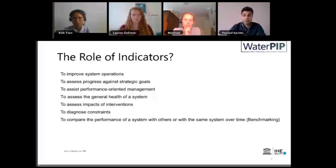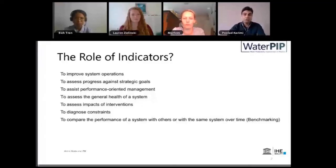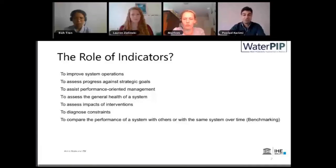We can also use that to look into the general health of the system, and also when we do an intervention, before doing so, we can see what the impacts of those interventions are. It can also be used for what we call benchmarking. Benchmarking is a practice in which we compare a system with other systems — for example, you have 10 irrigation schemes and want to know where scheme A stands in comparison with the other nine, or how scheme A compares with its own performance over the years. That practice in irrigation management is called benchmarking.